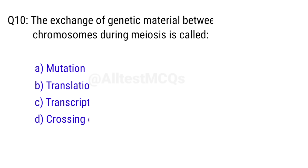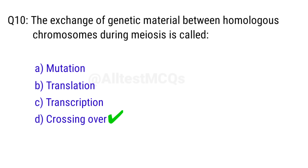Q10. The exchange of genetic material between homologous chromosomes during meiosis is called? Right answer is option D, crossing over.